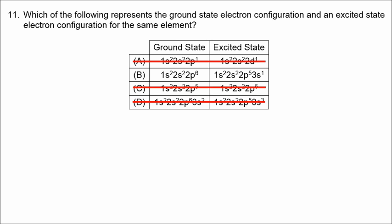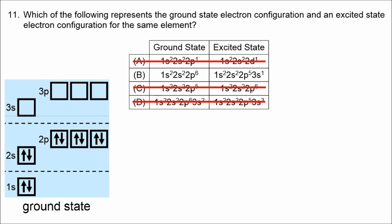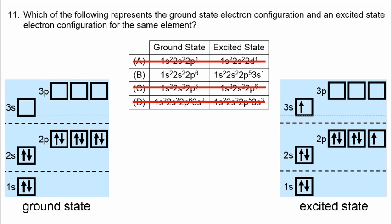An excited state takes an electron from a lower energy level and has it jump up to a higher level. For neon's ground state — 1S2, 2S2, 2P6 — we still have 10 total electrons in the excited state, but one electron has moved to a higher level. The correct answer is B.